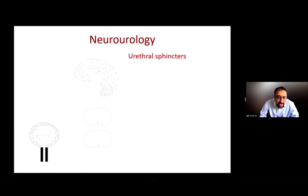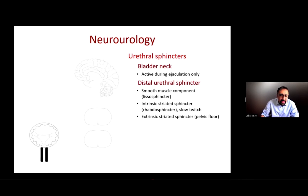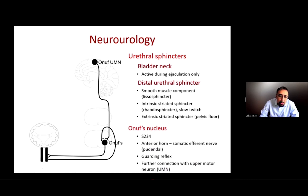The first component of the neurological system is the urethral sphincters, which has two parts: the bladder neck, which is really only active during ejaculation, and the distal urethral sphincter. The distal urethral sphincter consists of three components: the smooth muscle, the lissosphincter, the intrinsic striated sphincter or rhabdosphincter — which is slow-twitch muscle fibers — and the extrinsic striated sphincter, i.e. the pelvic floor. Controlling this is Onuf's nucleus at S2, S3, and S4, which sends a somatic nerve via the pudendal nerve controlling the sphincter and initiating the guarding reflex to stop leakage during straining.